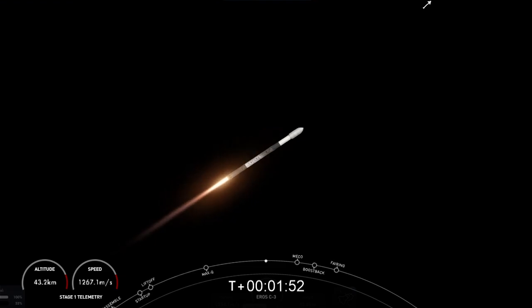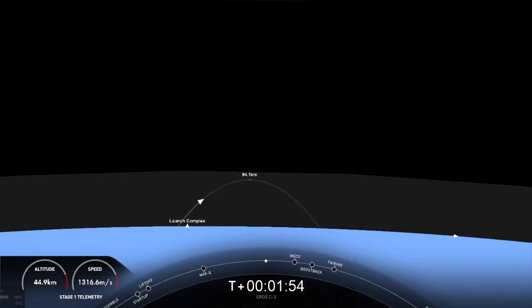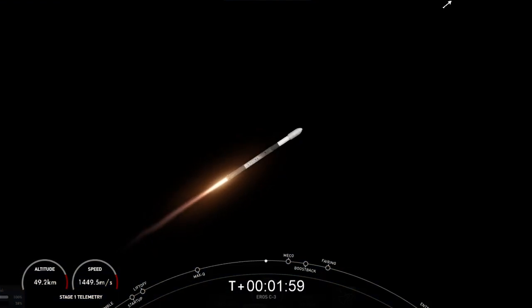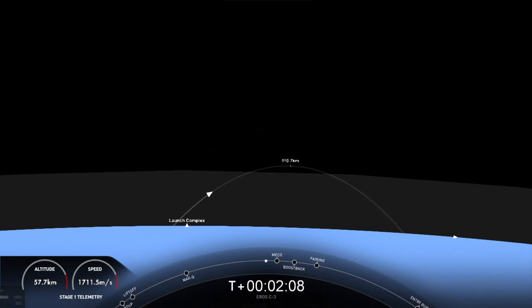Again, that's MECO, our main engine cutoff. Stage separation, Stage 1 Flip. That MBAC engine will start up on the second stage. And then we will have a boost back burn on the first stage, and then shortly followed by a fairing separation on the second stage.